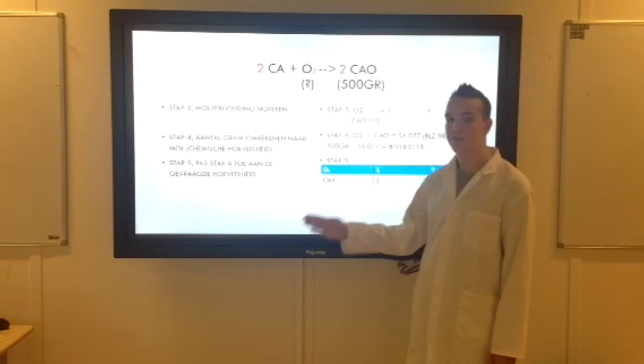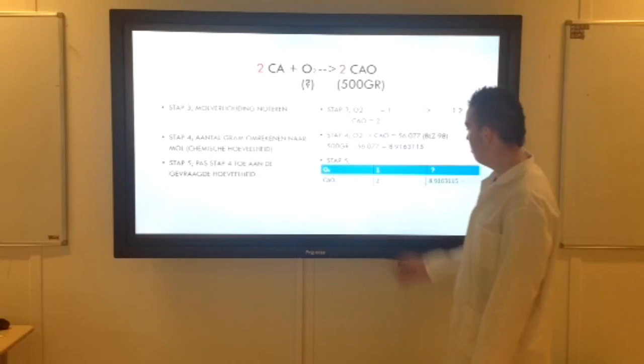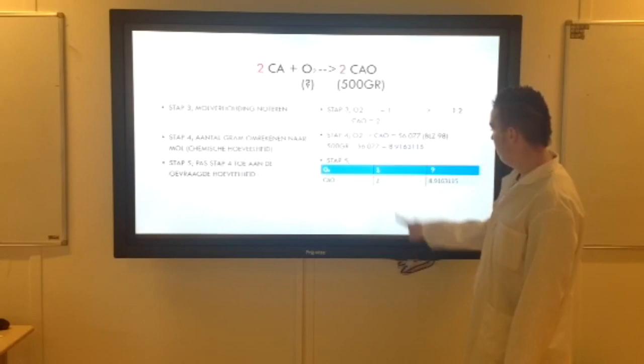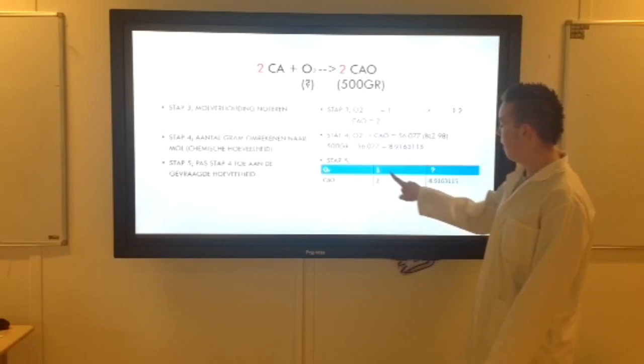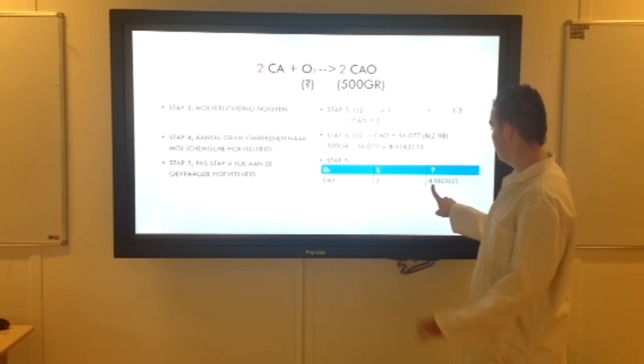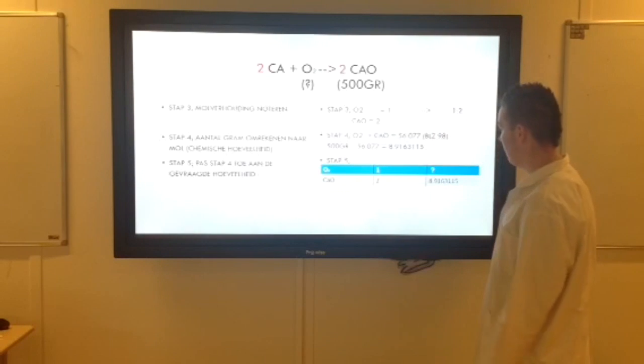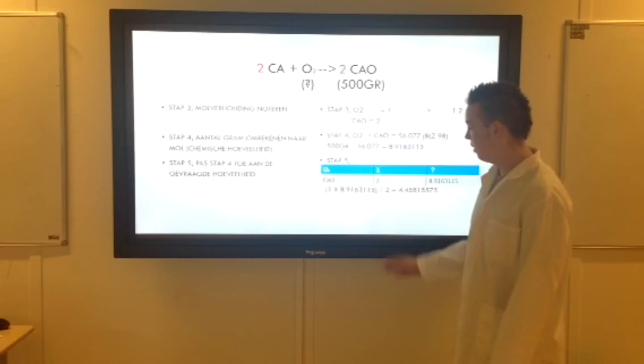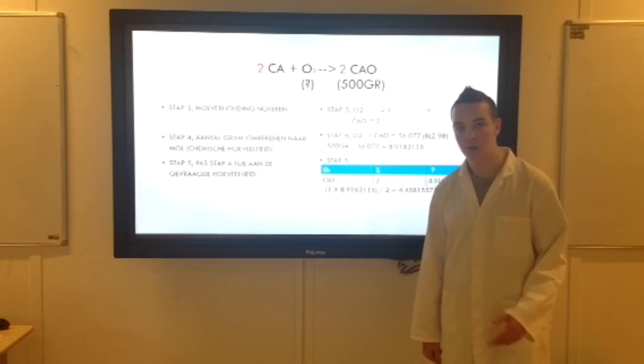Dan gaan we naar stap 5. En dan gaan we nummer 4 toevoegen aan nummer 5. Even een mooi tabelletje gemaakt. Een mooie kruistabel. Dit is wat we net hebben uitgekend bij stap 4. En dan gaan we 1 keer dat getal, in dit geval 8,9, delen door 2. Dan krijg je een mooi antwoord. Dat is 4,45. Dat is dan wat we hebben berekend.